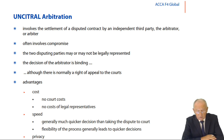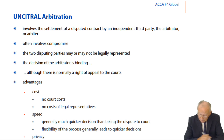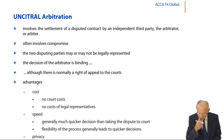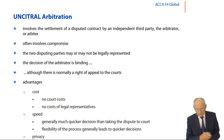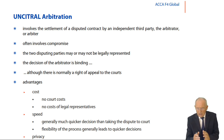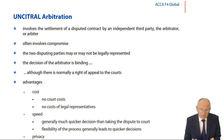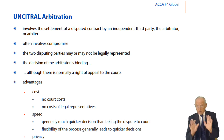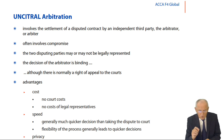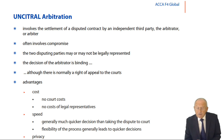UNCITRAL arbitration — the United Nations Convention on International Trade Law — involves a settlement of a disputed contract by an independent third party, the arbitrator or arbiter (two different words for the same person). They often involve compromise. The only reason disputes arise is because two parties don't see eye to eye. Unless it's clear that one party is obviously in the right and the other obviously in the wrong — which is unlikely, because if so, the one clearly wrong would likely hold their hands up and admit it.